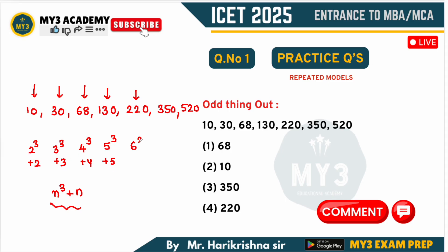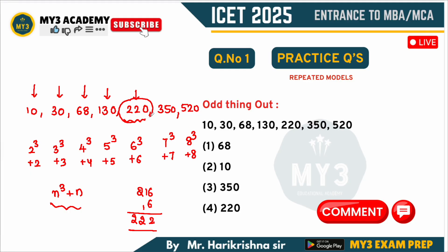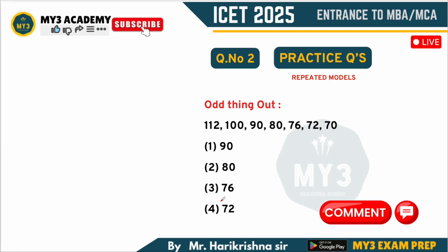If you observe: 2³+2, 3³+3, 4³+4, 5³+5 — the next number should be 6³+6. 6 cube is 216, and 216+6 = 222. But they have given it as 220, so this should be the wrong term. Checking further: 7³+7 = 350 and 8³+8 = 520, everything follows the pattern except 220. So the answer is 220, available as option 4.